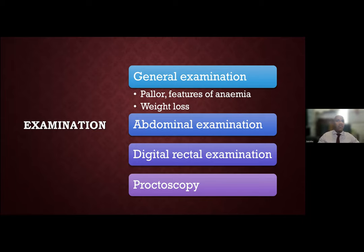On examination, look for pallor and features of anaemia because the patient has had bleeding. Look for weight loss, as several colonic conditions causing bleeding can cause weight loss. Then do an abdominal examination, a digital rectal examination, and a proctoscopy — these are mandatory parts of clinical examination in a patient presenting with bleeding.